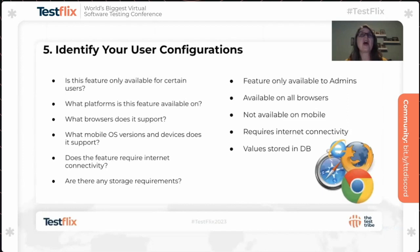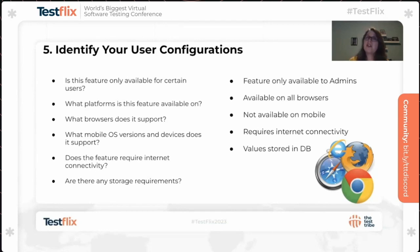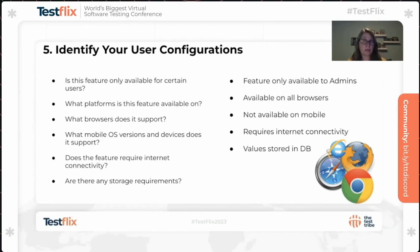Step five is to identify your user configurations. Is this feature only available for certain users? What platforms is it available on? What browsers does it support? What mobile OS versions and devices does it support? Does the feature require internet connectivity? Are there any storage requirements? For my feature, I discovered it was only available to admins. It should be available on all browsers, but not on mobile since our application wasn't on mobile. The feature required internet connectivity, and the values needed to be stored in the database.